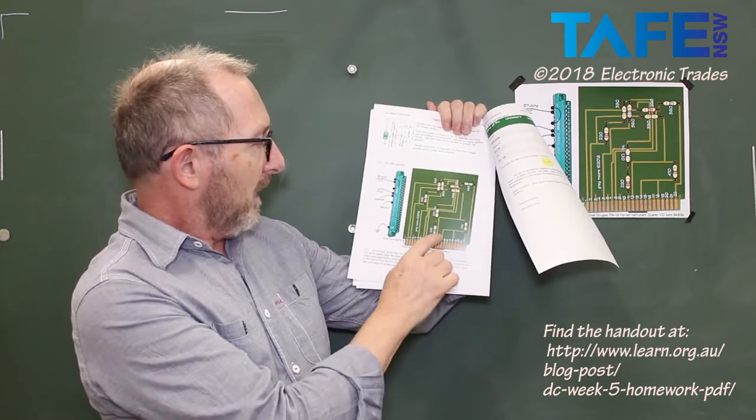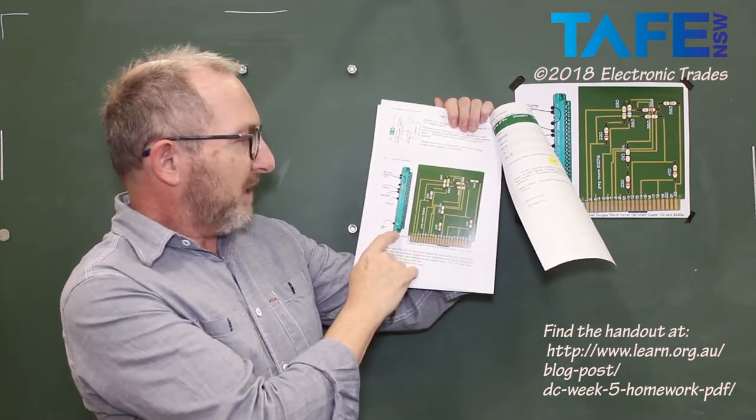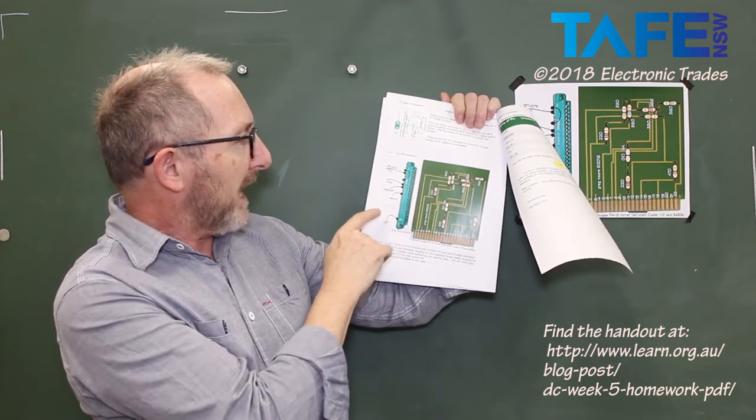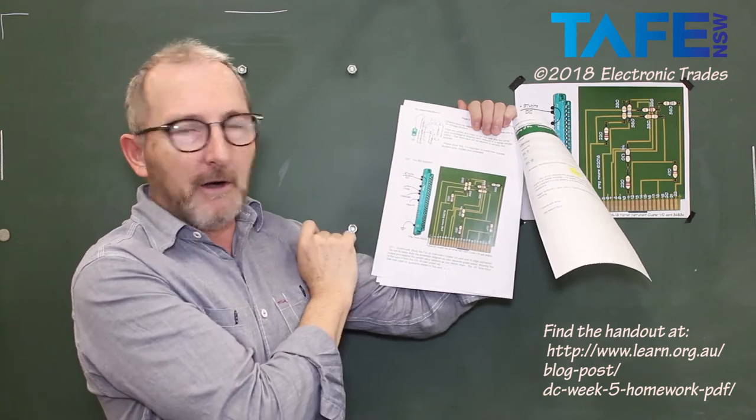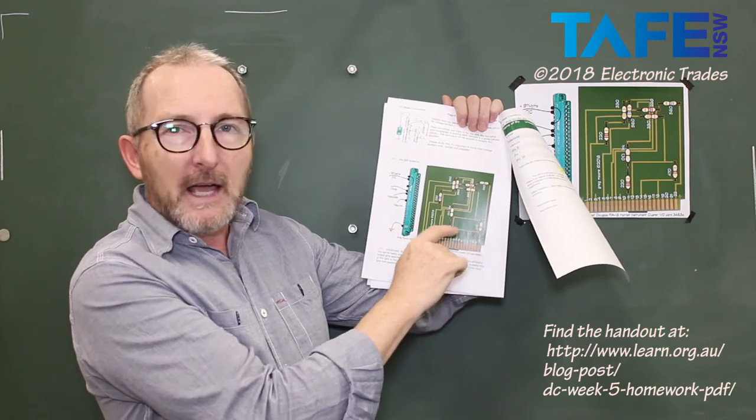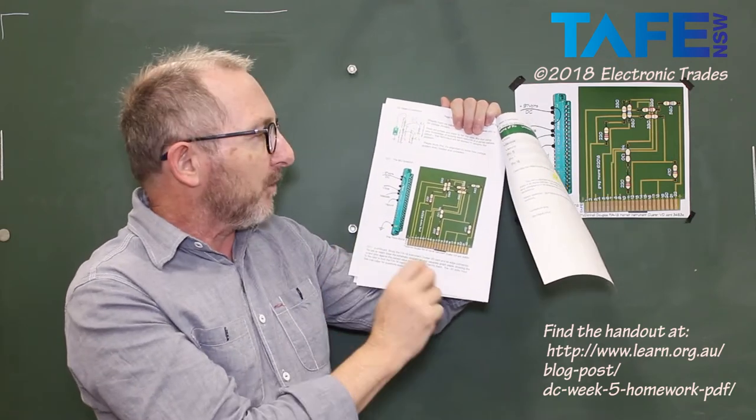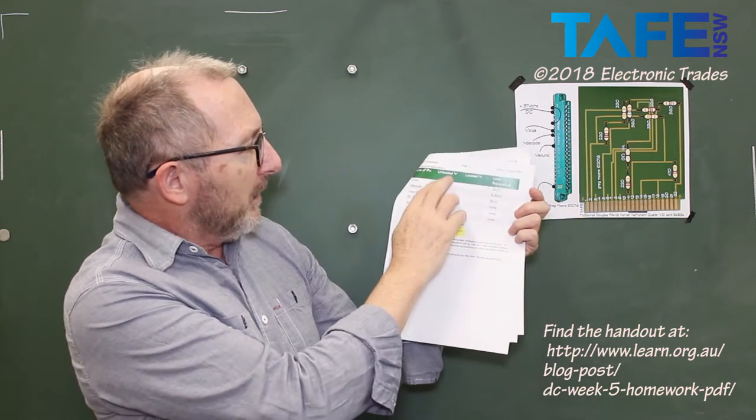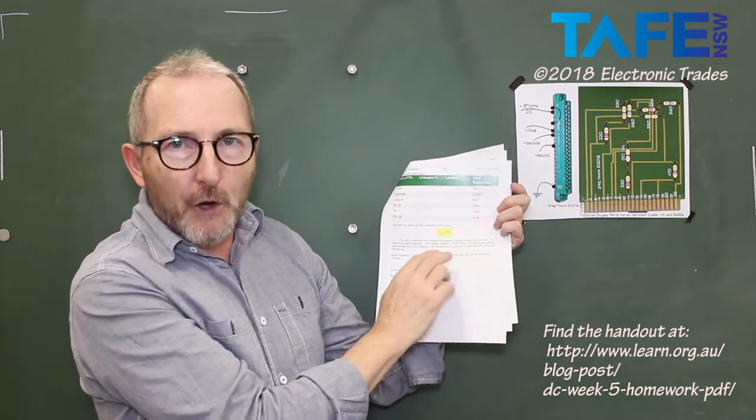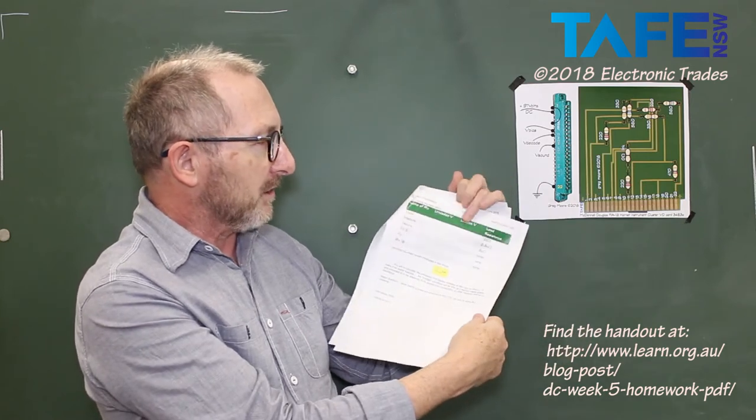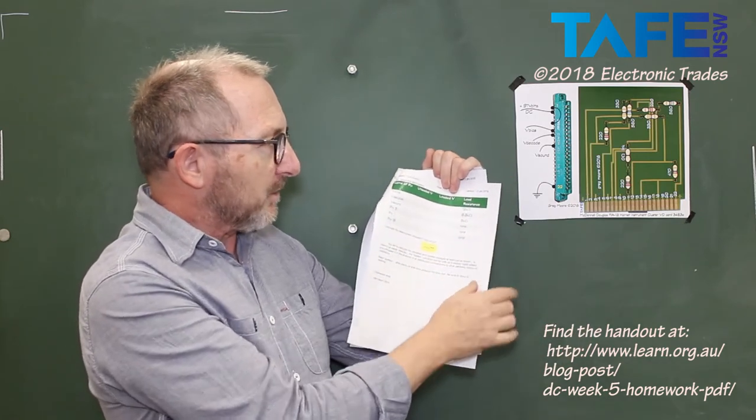And then towards the end of the homework there was a printed circuit board question and it had an edge connector socket. The edge connector socket had various outputs and it had one link on it. And you were required to go through and work out the actual schematic diagram for that and then calculate the unloaded outputs and calculate the loaded outputs for that.